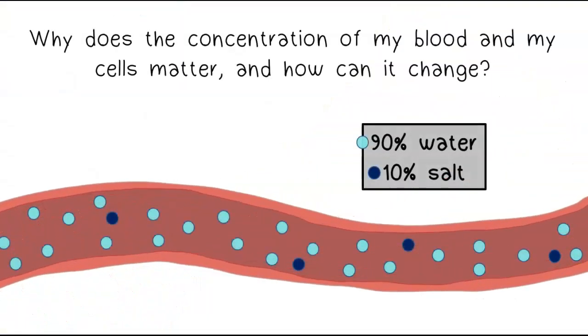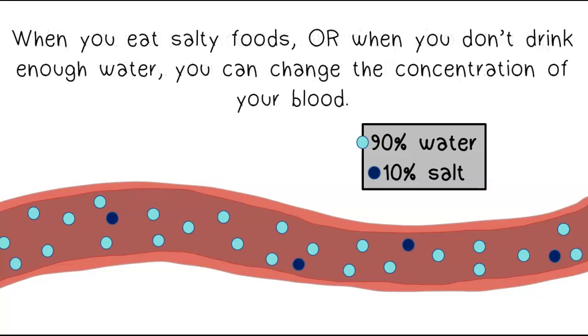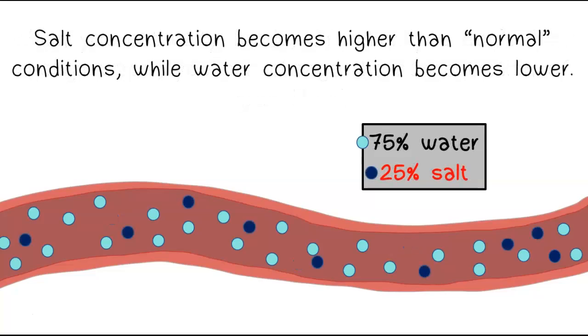Why does the concentration of my blood and my cells matter and how can it change? When you eat salty foods or when you don't drink enough water, you can change the concentration of your blood. Salt concentration becomes higher than normal conditions while water concentration becomes lower.